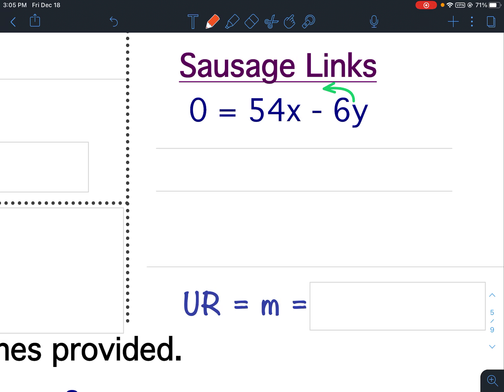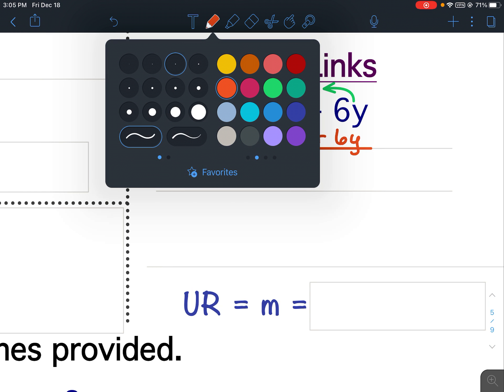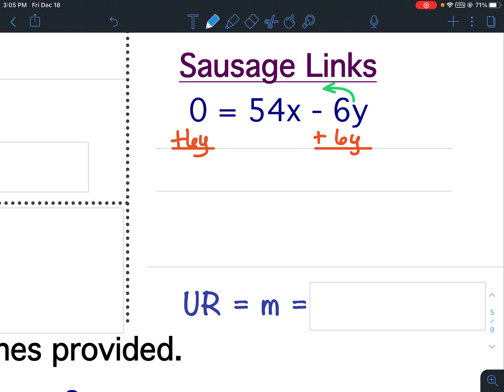Since it is a negative 6Y, the inverse operation would be to add 6Y to both sides. That would cancel the Y terms on the right. So now I have 6Y equals 54X.